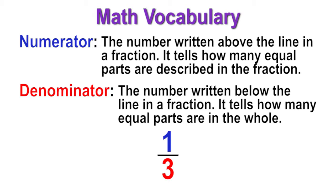The denominator is the bottom number in a fraction. It tells what is being counted. The numerator is the top number in a fraction, and it tells how many equal-sized pieces are described in the fraction.